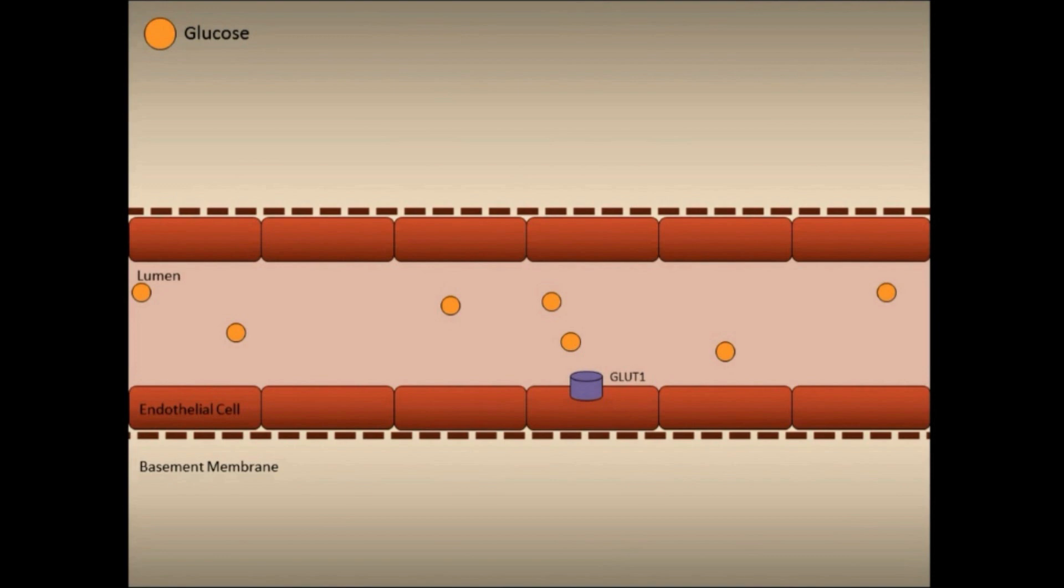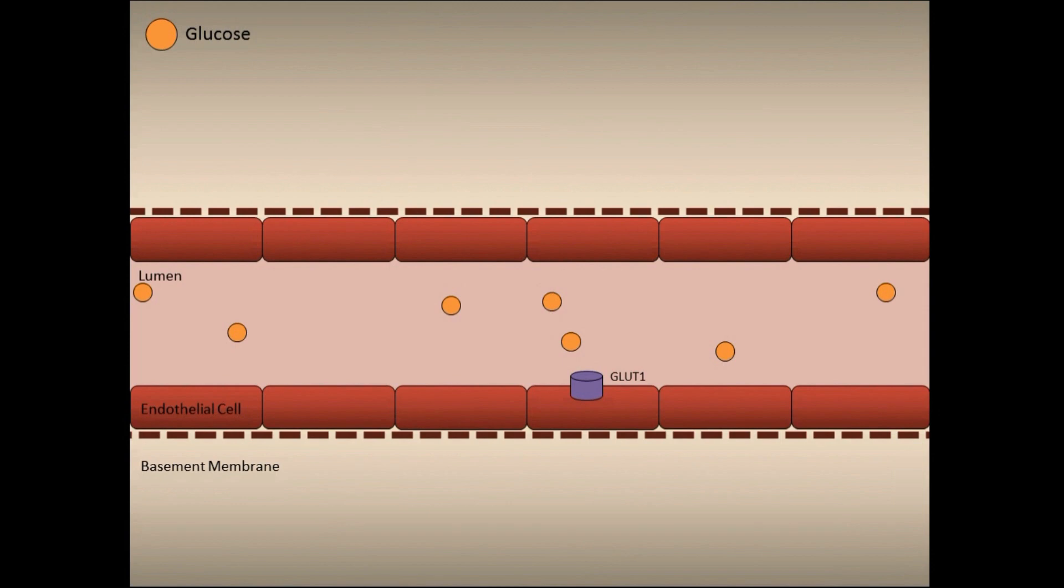Endothelial cells, or cells lining our blood vessels, have another type of glucose transporter called GLUT1. Unlike GLUT4, GLUT1 always stays on the surface of the cell and does not need insulin for activation.